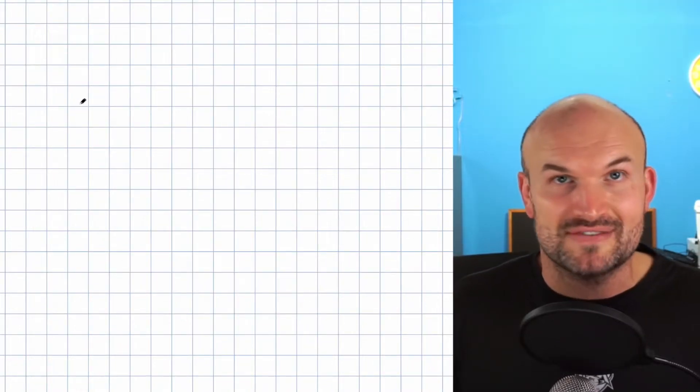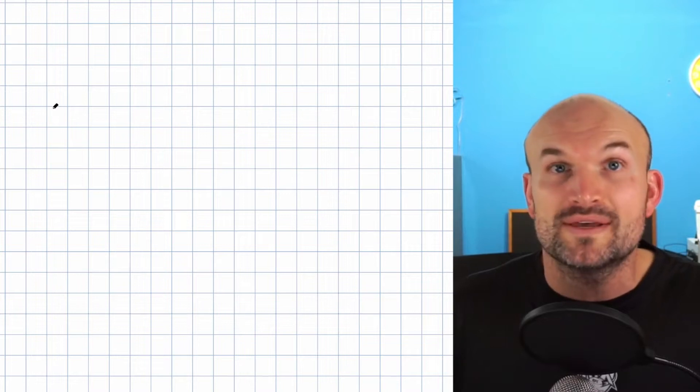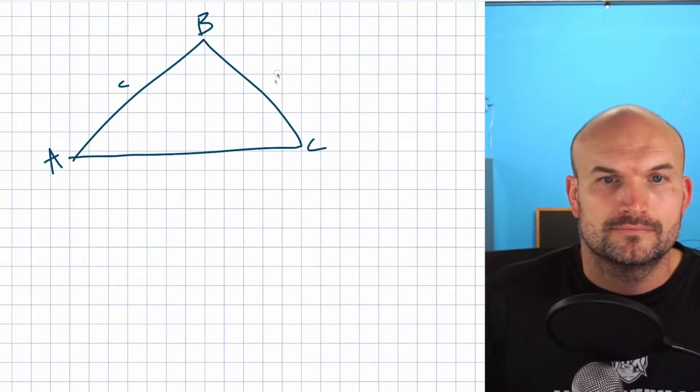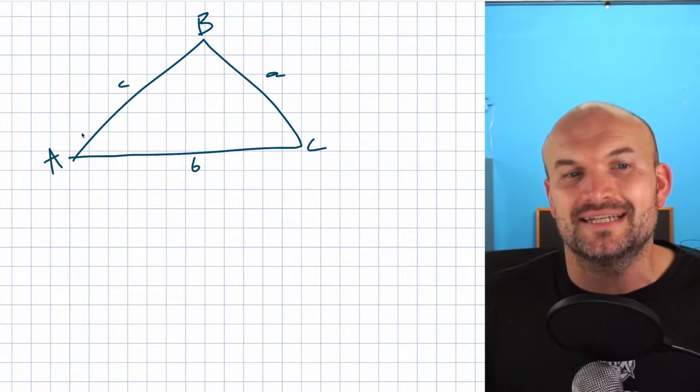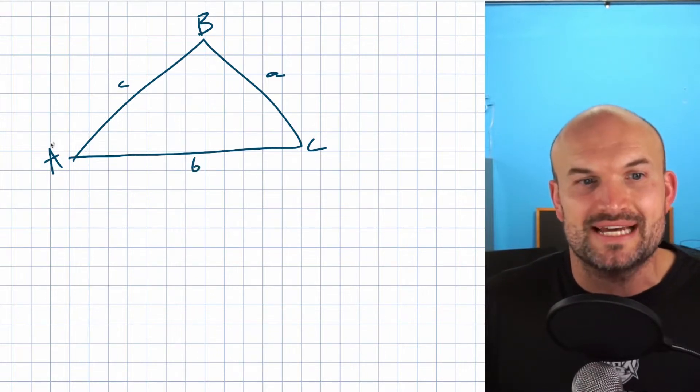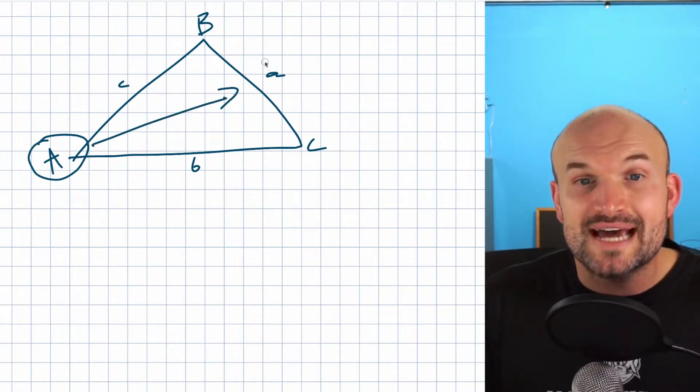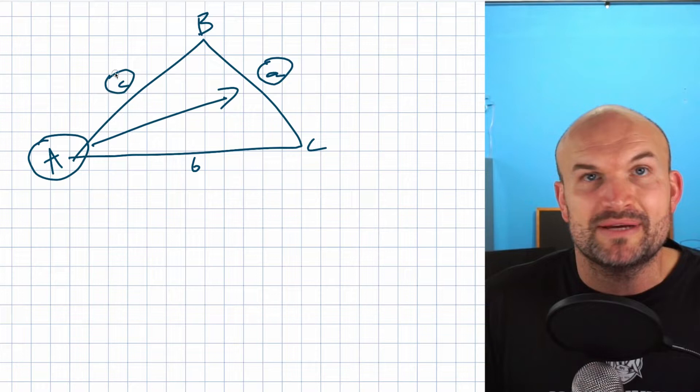Whenever we're dealing with a problem with the law of sines, I always recommend students go ahead and draw a picture of the triangle with the side lengths. Whenever we're dealing with the ambiguous case, I always like to deal with my angle in the lower left-hand corner, my opposing side length to be here, and then the lower side to be here.